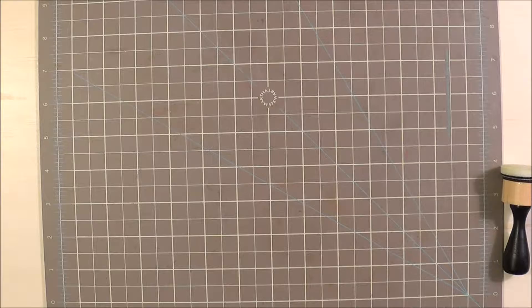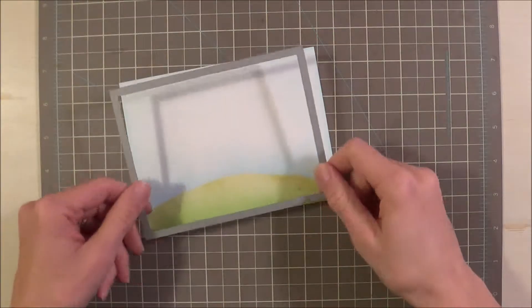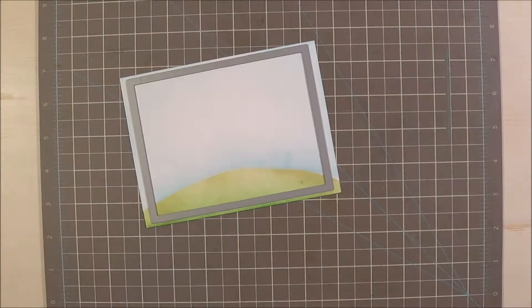Okay, so now I'm going to grab my cuddle bug and I'm going to cut this down using a stitched border die, just kind of like that.